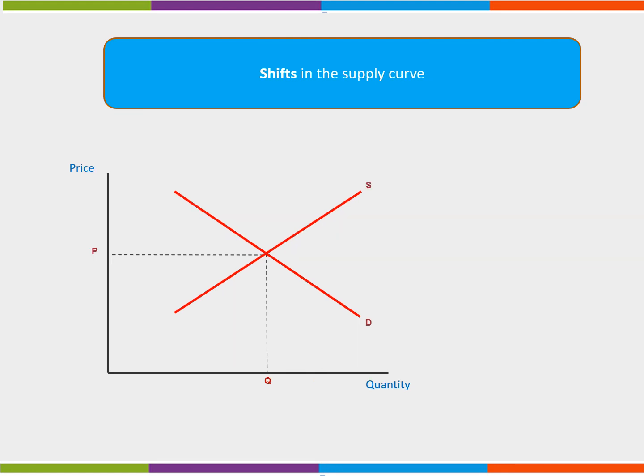Shifts in the supply curve can be shown graphically. An increase in supply will see the supply curve shift downwards and towards the right from S to S1. This will cause price to fall to P1 and quantity supplied to rise to Q1. At this point, we have a new market equilibrium, P1-Q1.